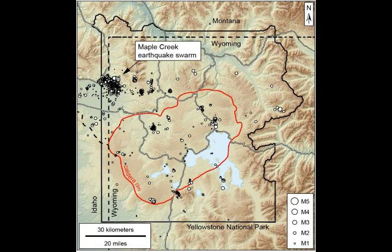This is a map from the USGS showing the caldera and the boundary of the park in bold black line. The Maple Creek earthquake swarm is in the upper left-hand side. The Hebgen Lake area is just outside the scope of the map, left of the Maple Creek swarm area. Hebgen Lake had the huge 7.3 magnitude earthquake in August of 1959, and even though it's not in the park boundary, it is part of the Yellowstone supervolcano.